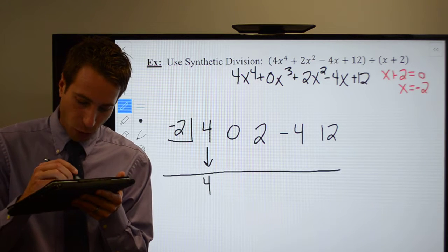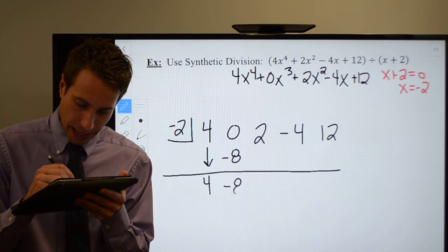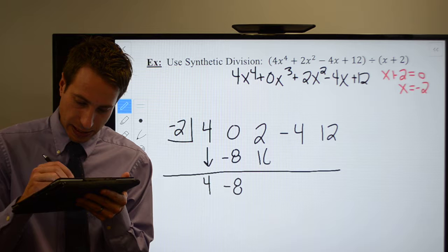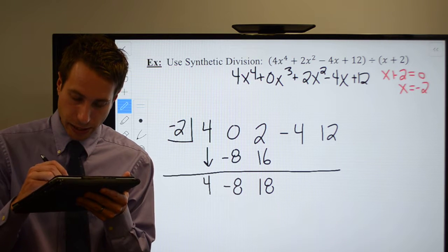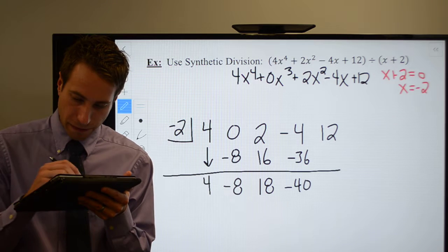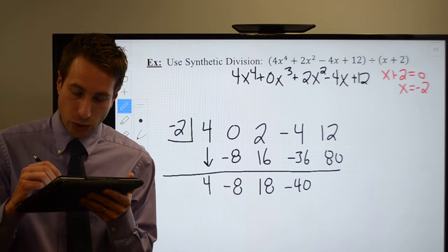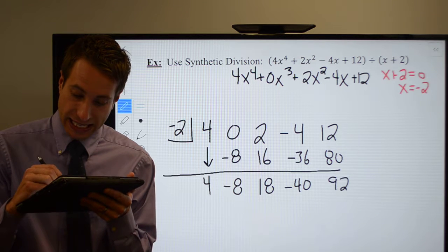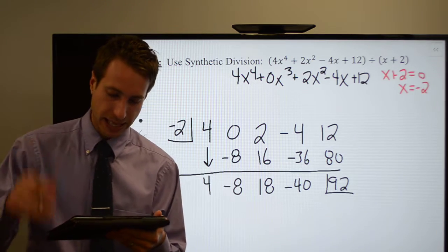Then you multiply and add until you run out of numbers. Negative 2 times 4, negative 8. Add them up, going to be a negative 8. That's going to give you 16, which would be 18, which is going to be a minus 36, which is going to give you a negative 40, which is going to give you a positive 80, which leaves you with a 92 as a remainder. A gigantic remainder, but that's okay.